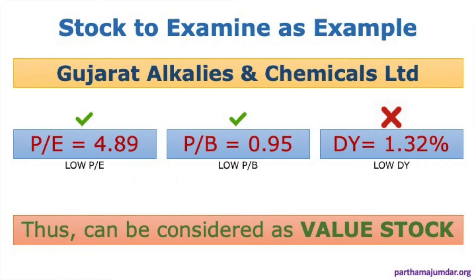We will now discuss each of the 9 parameters. Before we start, let us take a stock as an example. The stock chosen is Gujarat Alkalies and Chemicals Limited. The PE is 4.89 — a low PE — and the PB is 0.95 — a low PB. Though the dividend yield is also very low, we can consider this a value stock. Piotrowski only considers PB as the parameter for identifying a value stock, so with a low PB this qualifies as a high book-to-market stock.